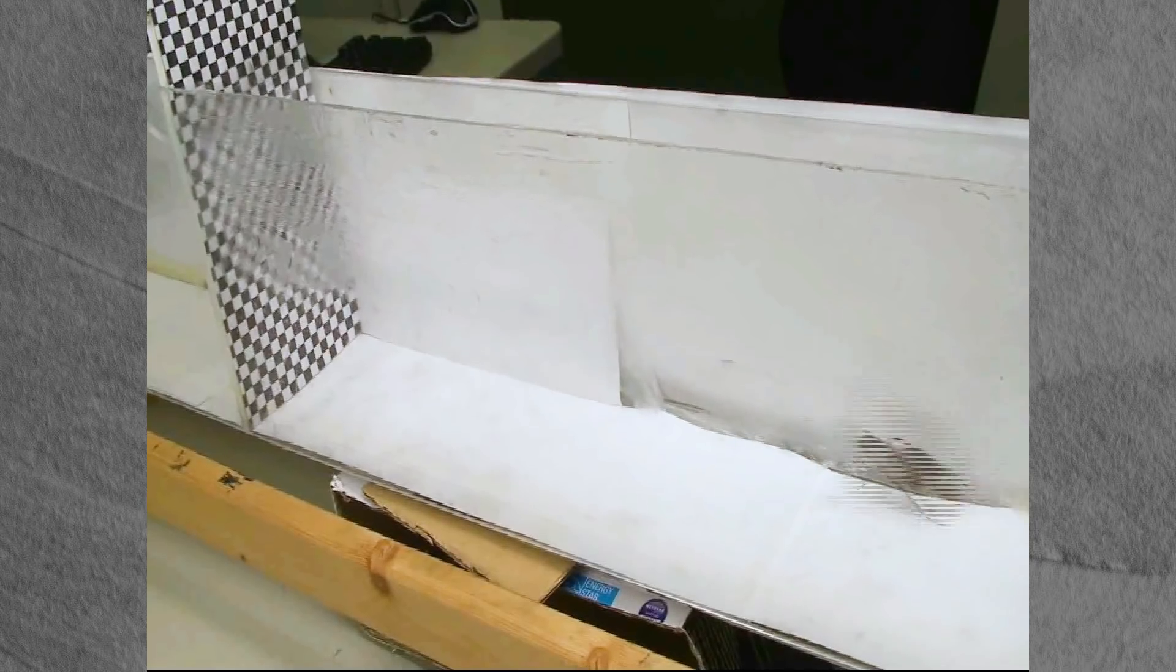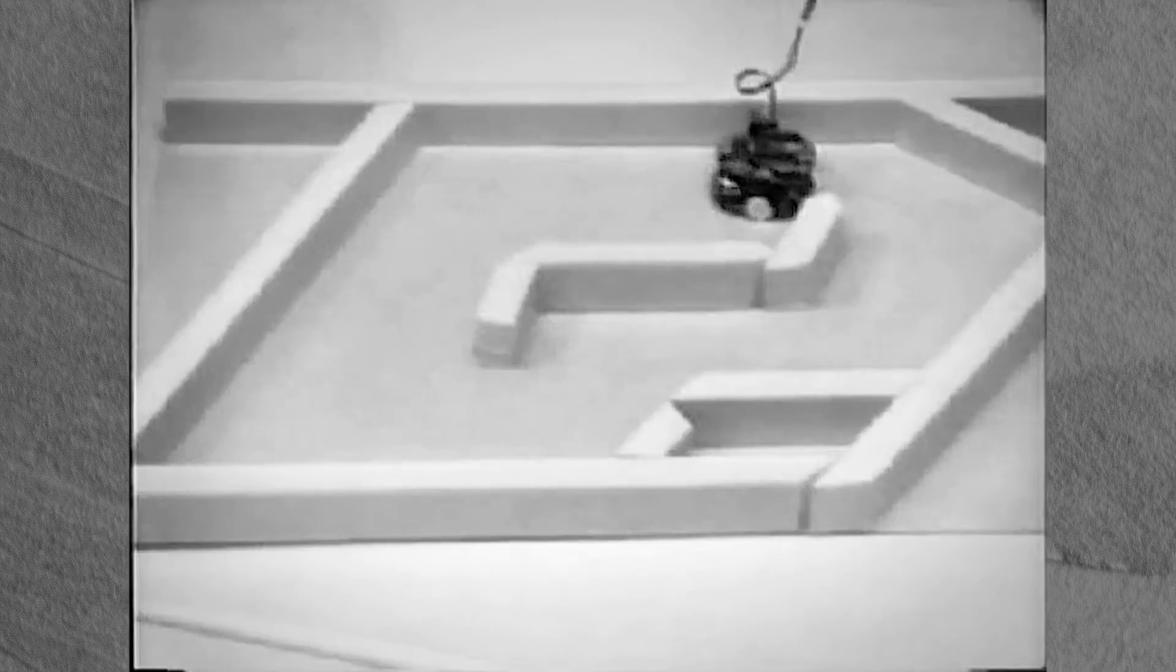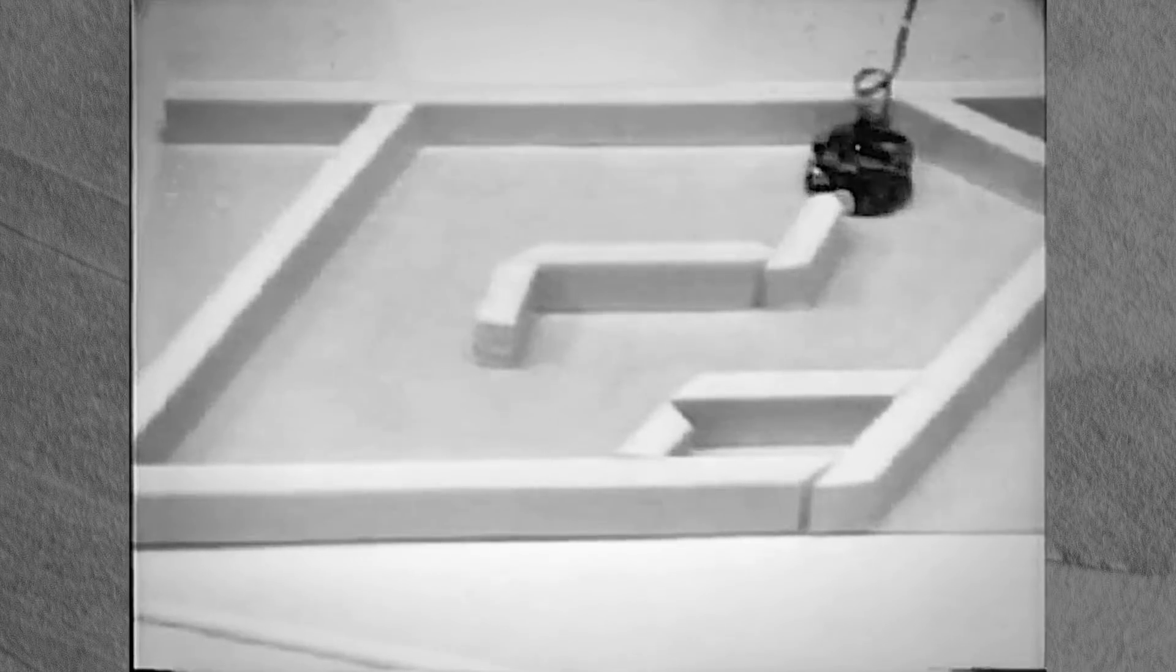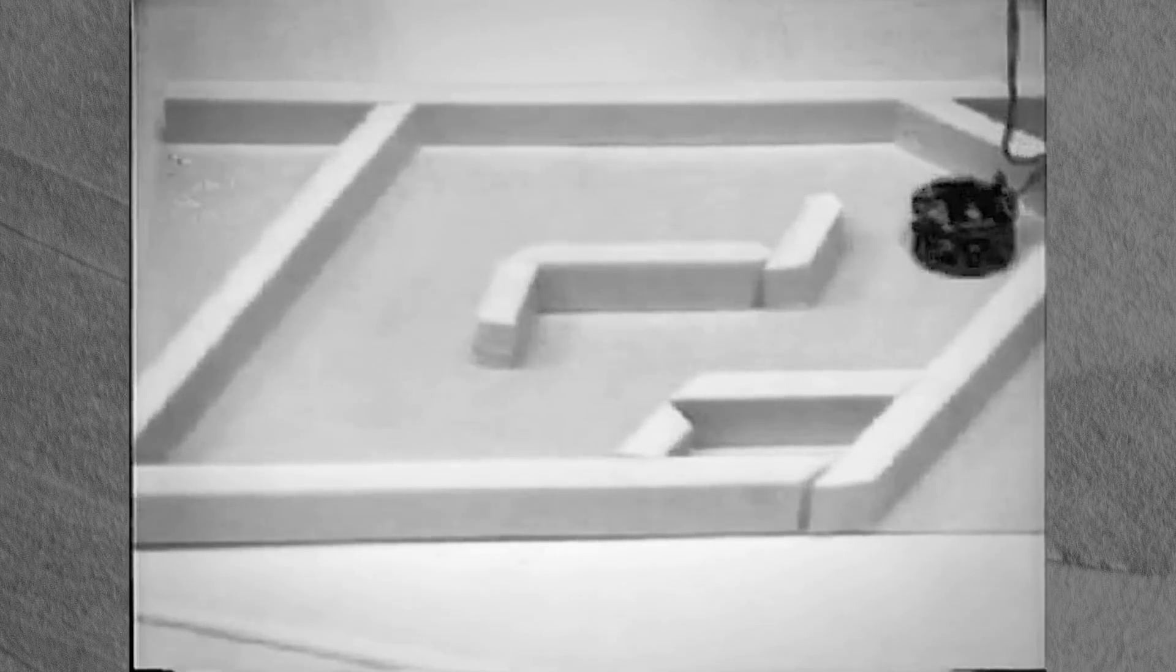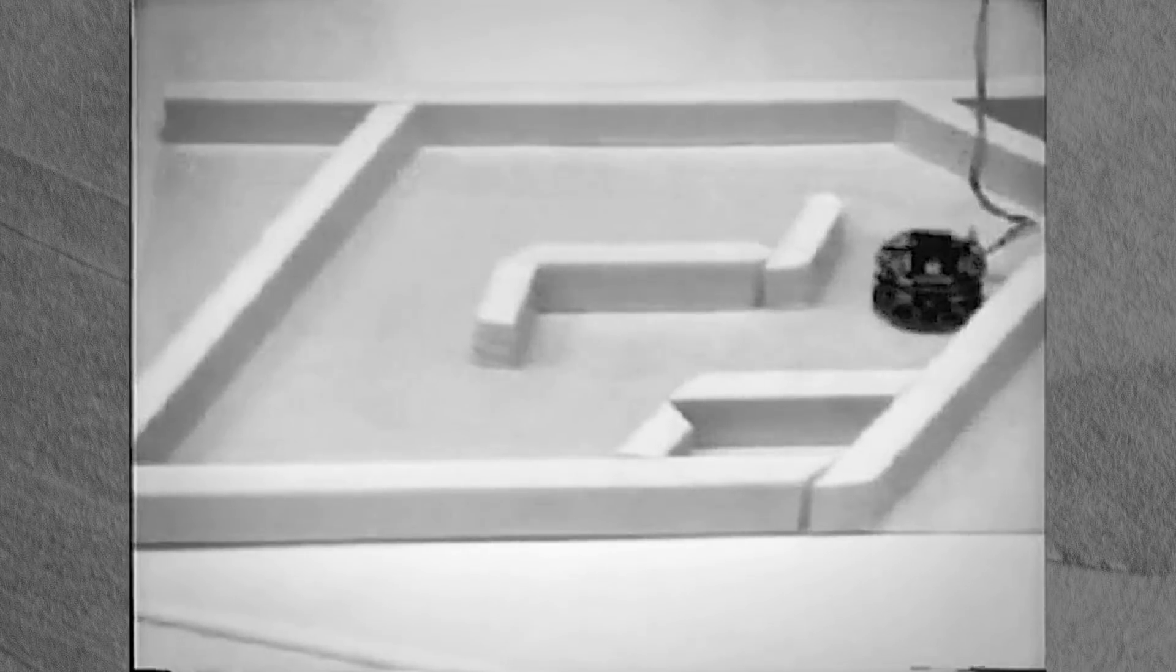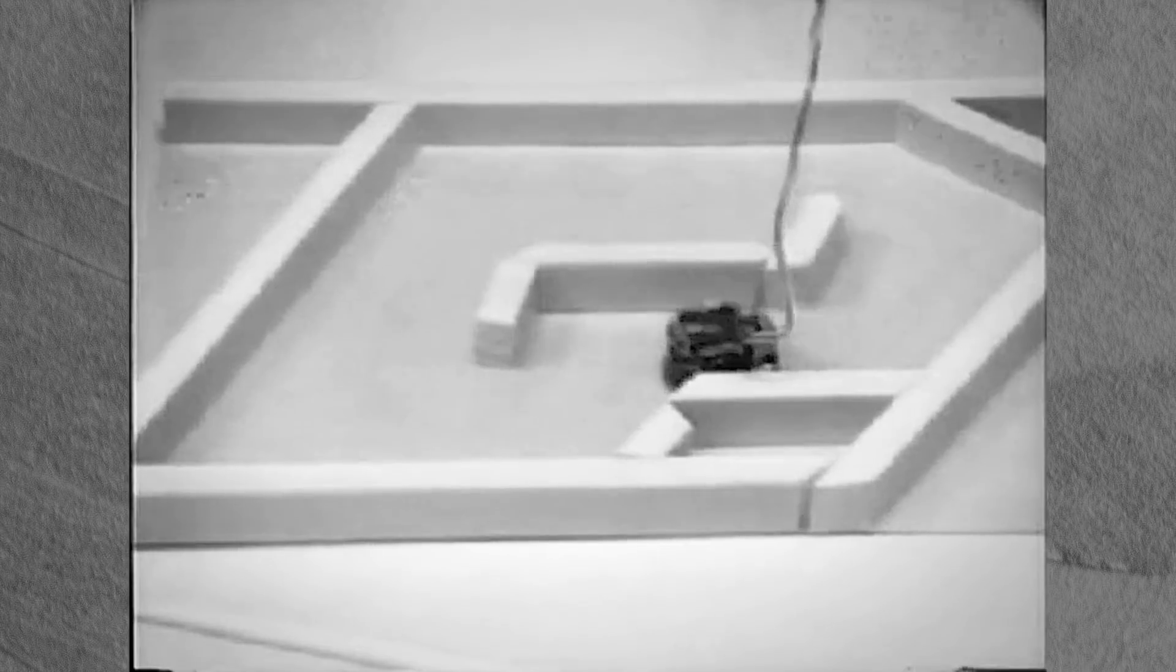Now researchers are taking a page from the Cockroach Playbook to create their own wall-climbing bot. Most mobile robots deal with obstacles by sensing and then dodging around them, but this decision-making process slows them down and limits their ability to perform high-speed tasks.